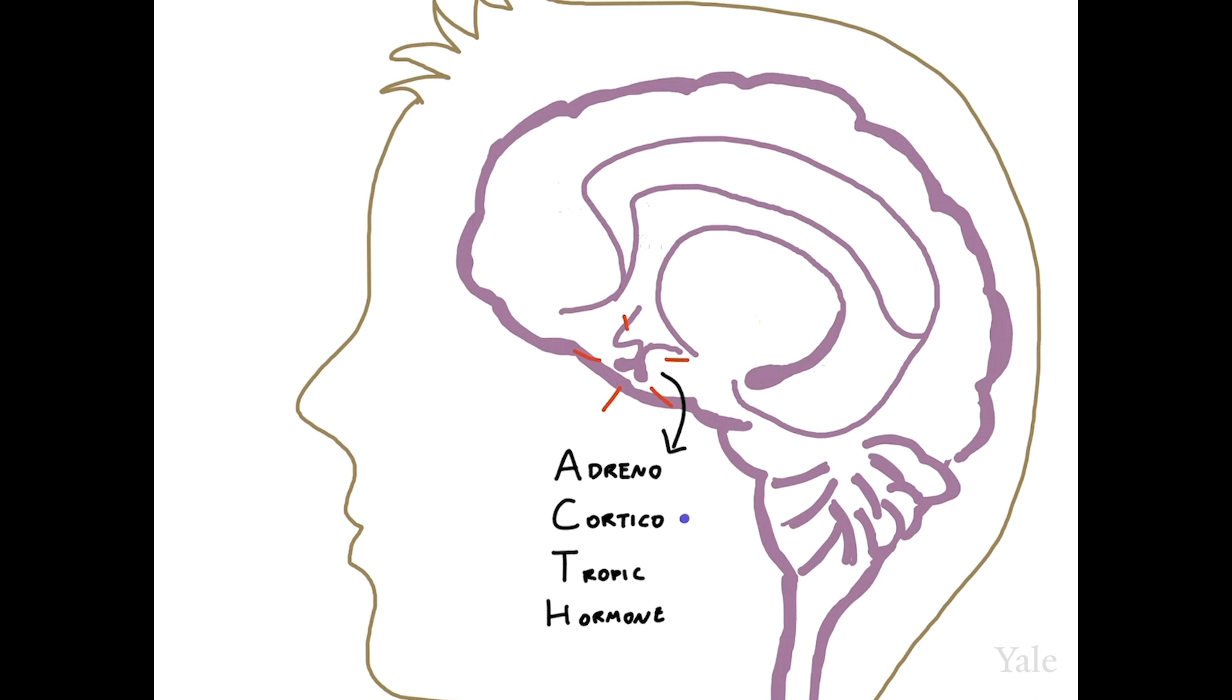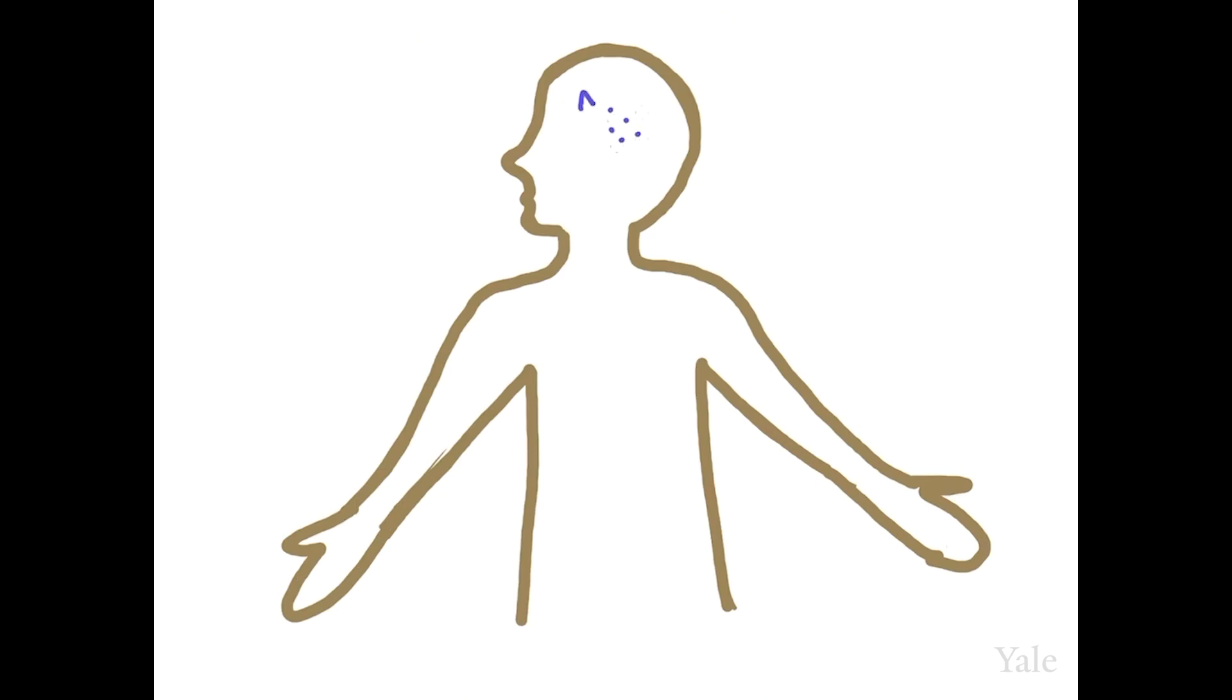ACTH is then released into the blood and travels through the bloodstream down to the adrenal glands, which sit above the kidneys. Here, ACTH stimulates the adrenal cortex to release cortisol, which you may have heard referred to as the stress hormone.